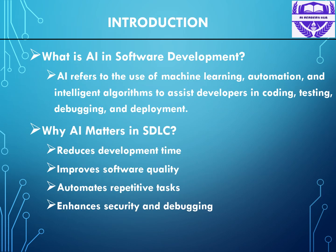Let's start with the basics. AI, or artificial intelligence, is all about machines performing tasks that typically require human intelligence, like learning, reasoning, and problem solving. In software development, AI isn't here to replace developers, but to empower them — to improve code quality, automate repetitive tasks, enhance security, and identify issues before they arise.